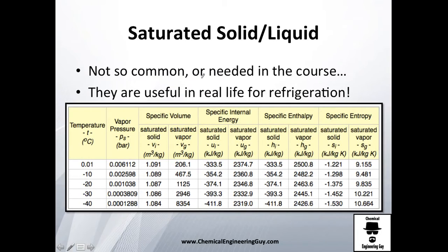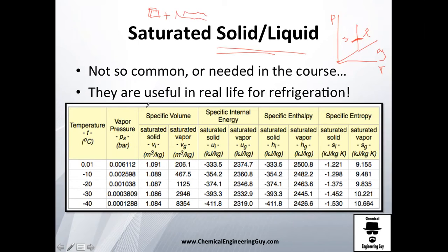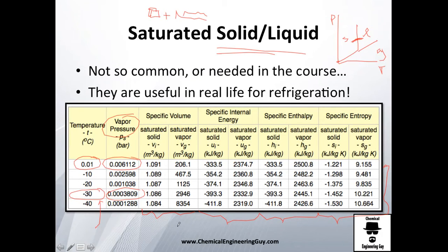Finally, there is a solid-liquid saturation table, which is less commonly used. This corresponds to the solid-liquid boundary line on the PT diagram — the region where you have ice plus liquid water coexisting. These tables are useful in refrigeration applications. For example, at 0°C the vapor pressure is nearly zero, and if you want to know what pressure is needed to convert water at −30°C into ice, you would need 0.00038 bars. However, for this course we'll primarily work with liquid and vapor.